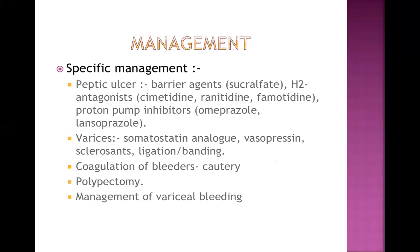For specific management according to cause: if peptic ulcer is causing upper GI bleeding, use PPI, H2 receptor antagonist, or sucralfate. If esophageal varices is the cause, use somatostatin analogs, vasopressin, sclerosing agents, ligation, or banding. If a bleeding source is visible on endoscopy, perform cauterization. If a polyp is the cause, perform polypectomy.